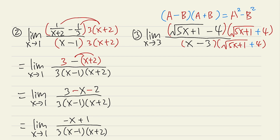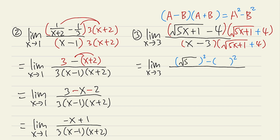This gives us the limit as x approaching 3. On the top, we square the first term and subtract the square of the second: square root of (5x plus 1) squared minus 4 squared. The square and square root cancel, giving 5x plus 1 minus 16. On the bottom, we leave x minus 3 times (square root of 5x plus 1 plus 4) — do not multiply it out.